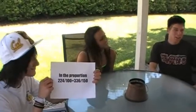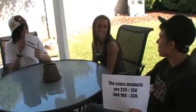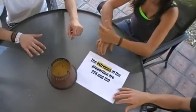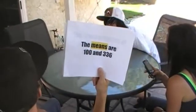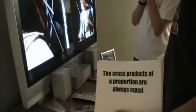That, my friend, is a proportion. Every proportion has two cross products. And in the proportion 224 over 100 equals 336 over 150, the cross products are 224 times 150 and 100 times 336. The extremes of a proportion are 224 and 150. The means are 100 and 336. The cross products of a proportion are always equal.